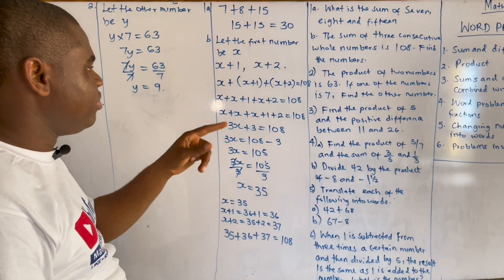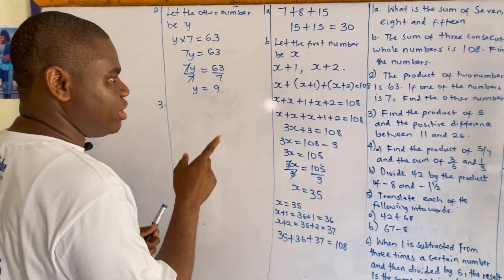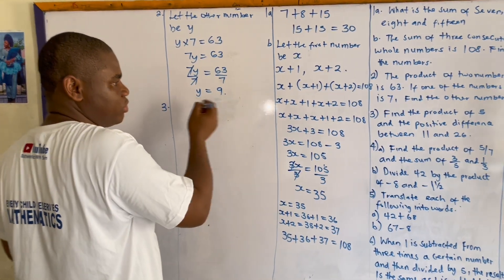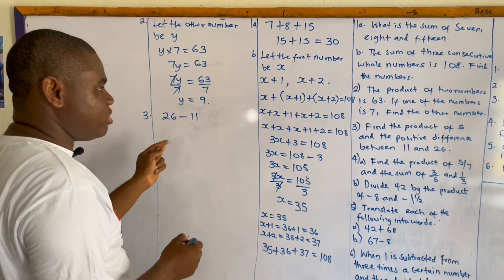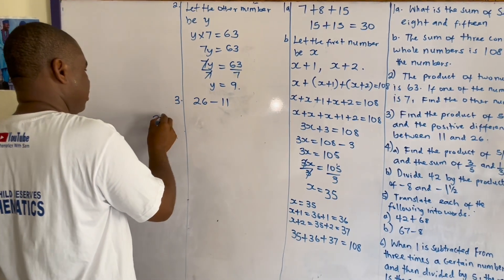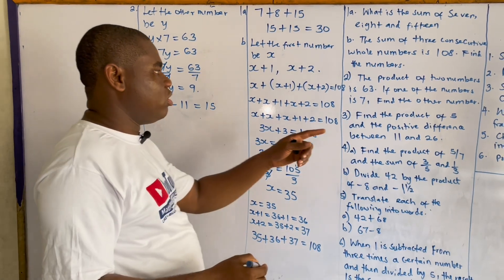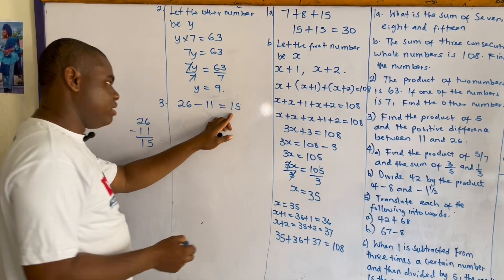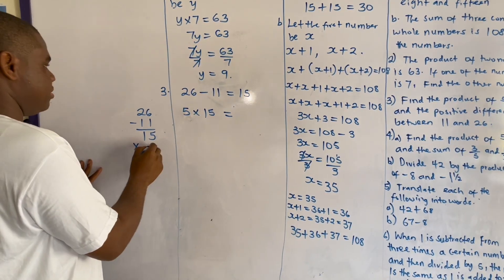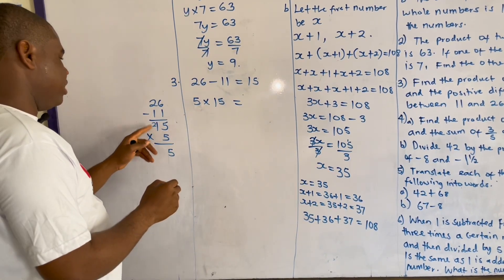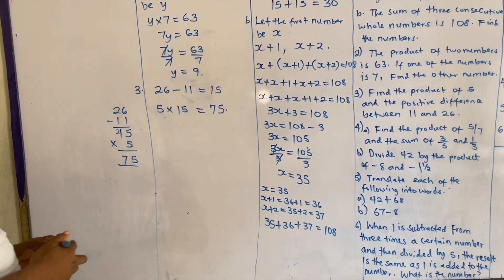Next: find the product of five and the positive difference between eleven and twenty-six. First we calculate the positive difference between eleven and twenty-six. Positive difference means twenty-six minus eleven, because eleven minus twenty-six would give a negative result. So twenty-six minus eleven equals fifteen. The equation asks for the product of five and that positive difference, so we have five times fifteen, which equals seventy-five.